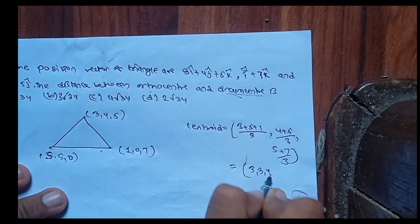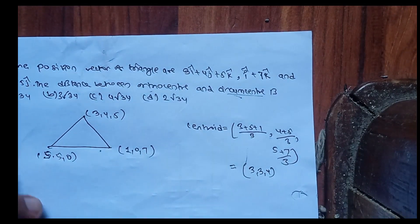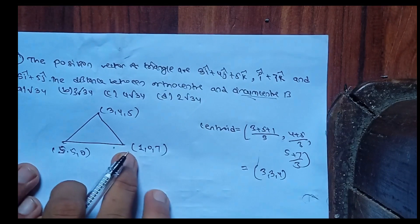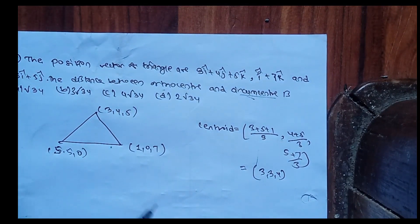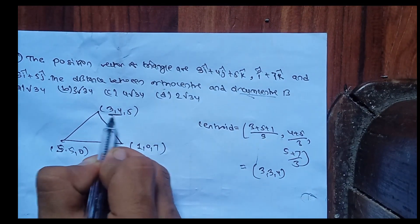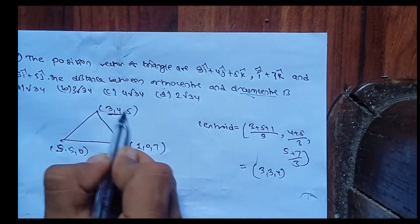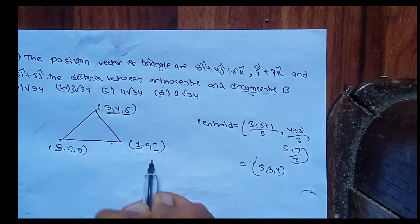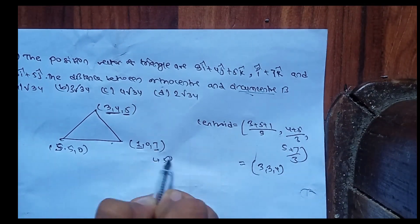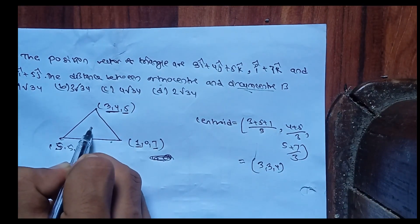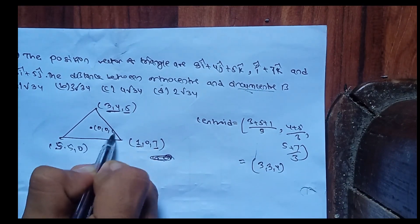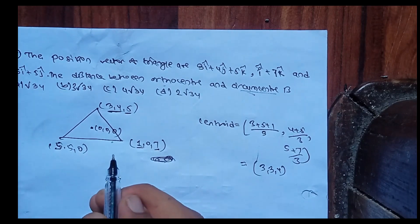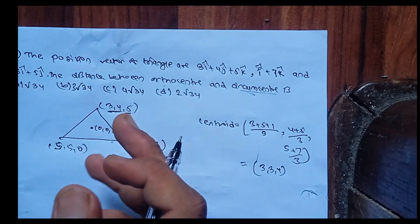Computing the centroid coordinates: (3+5+1)/3 for x, (4+5)/3 for y, and checking distances. The circumcentre and orthocentre relationship involves the Euler line. Distance calculation: sqrt(1² + 1² + ... ) gives us the answer.